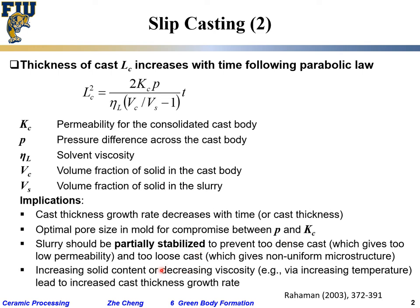Increasing solid content or decreasing viscosity leads to an increased thickness growth rate. Think of it by analogy: decreasing viscosity raises the effective diffusion coefficient, making the cast grow faster — as if diffusion proceeds faster. That is the parabolic relationship analogy.